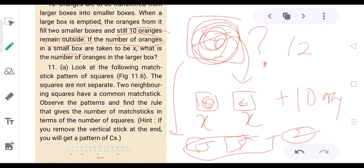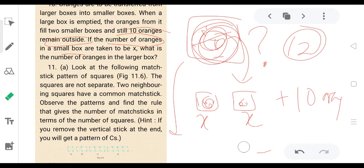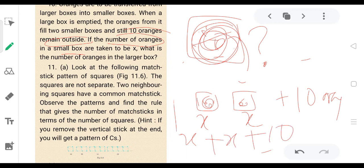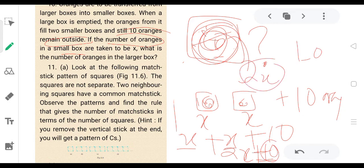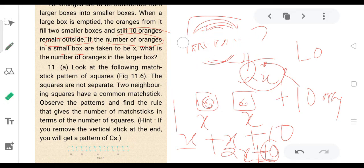In order to get the number of oranges, so x plus x is 2x, x plus x is 2x, and plus 10. So 2x plus 10. This is the number.